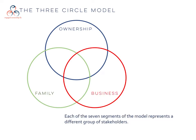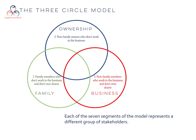Each of the seven segments of the model represents a different group of stakeholders. Number one: family members who don't work in the business and don't own shares. Number two: non-family owners who don't work in the business. Number three: non-family members who work in the business and don't own shares.